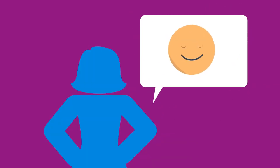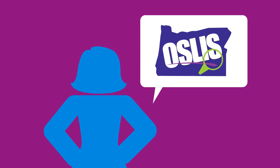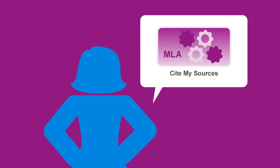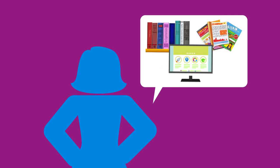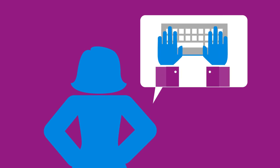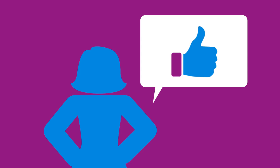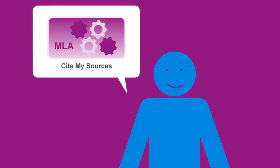Don't worry, Omar. Just go to the OSLIS website and use Citation Maker. You just choose the type of source you used, like book, website, or magazine, and fill in the text boxes with information like author, title, publisher, date, and so on. It's an awesome tool that will save you time and frustration. Thanks, Maria. I'll give Citation Maker a try.